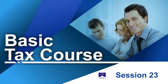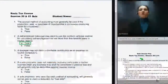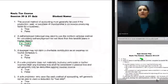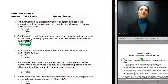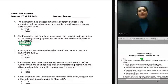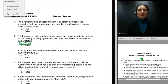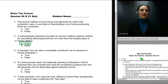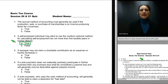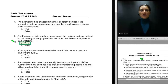Hello and welcome to Session 23 of the Basic Tax Course. We're going to begin Session 23 with a review of the Sessions 20-21 quiz. The first most frequently missed question on the Session 20-21 quiz is question number two. A self-employed individual may elect to use the non-farm optional method for calculating self-employment tax not more than five taxable years in his or her lifetime.